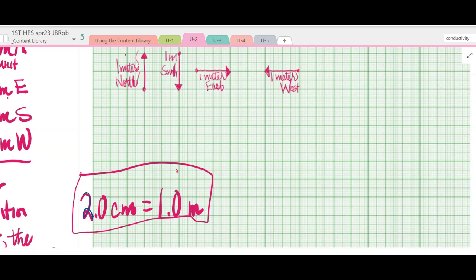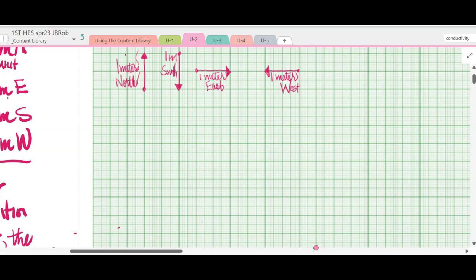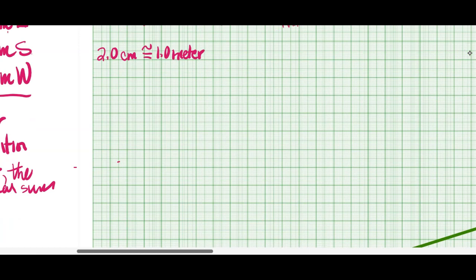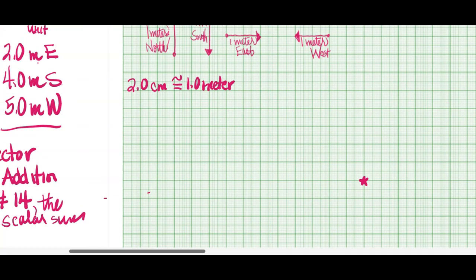I'm going to erase this thing I have here because it's gotten so large. That is the scale pretty much that we're using: 2.0 centimeters is equivalent to 1.0 meter. I measured it with my ruler. So let's pick this guy right here. I'll make a star. This is our origin, and we're going to follow this one that says 3 meters north. This was just one of the set of directions.